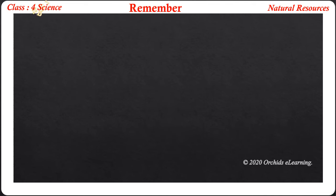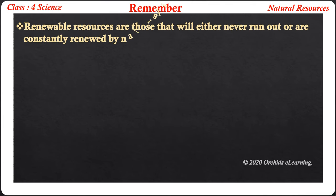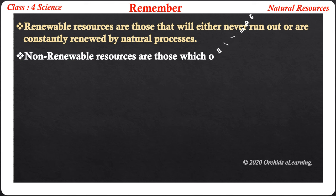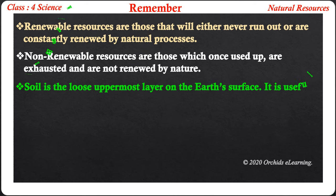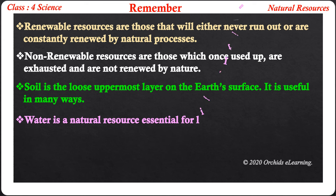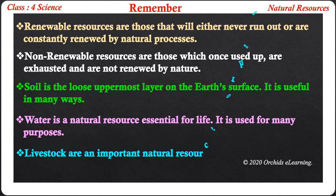Remember: renewable resources are those that will either never run out or are constantly renewed by natural processes. Non-renewable resources are those which, once used up, are exhausted and are not renewed by nature. Soil is the loose uppermost layer on the earth's surface and is useful in many ways. Water is a natural resource essential for life and is used for many purposes. Livestock is an important natural resource for humans.